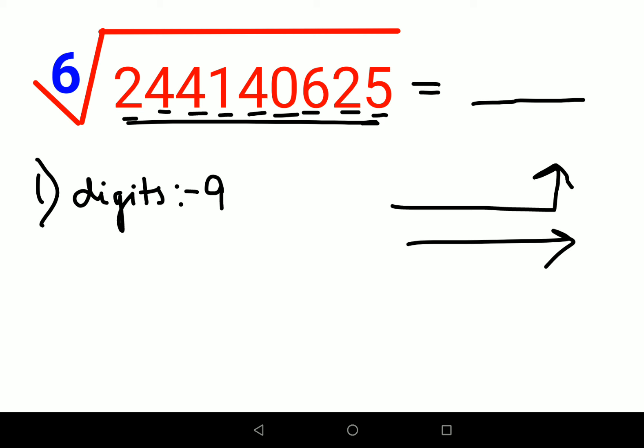Now we will see whether this answer is a two digit number or a three digit number. For that, let's check what is the answer when you do 10 raised to 6. You have 1 and how many zeros? 6 zeros. So total number of digits here is 7.